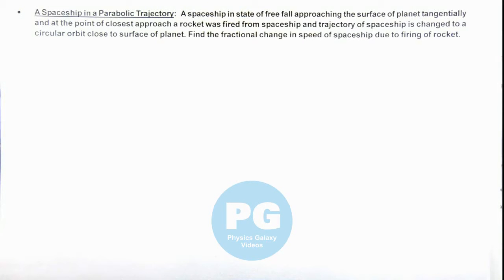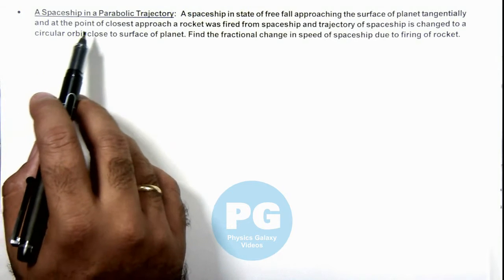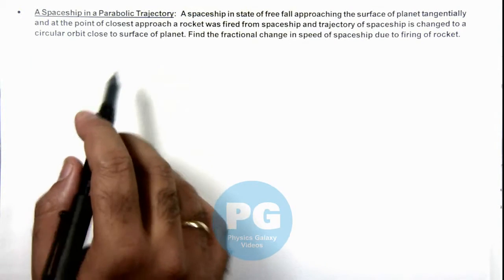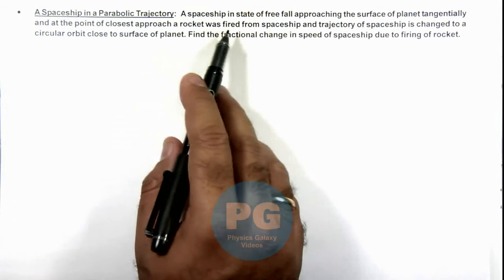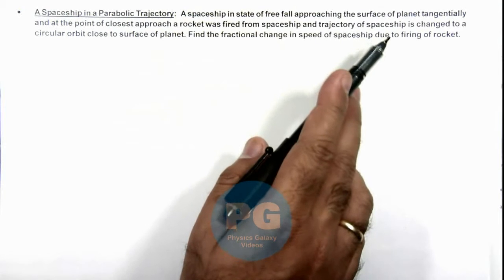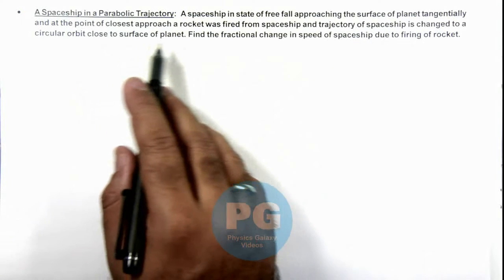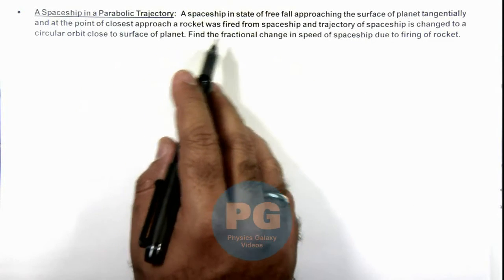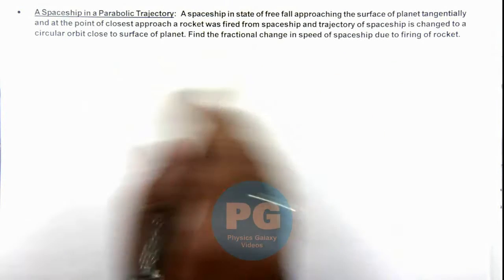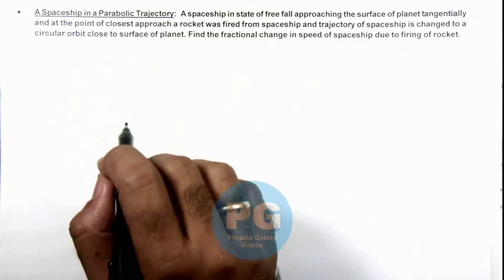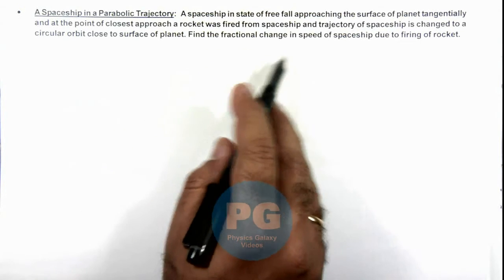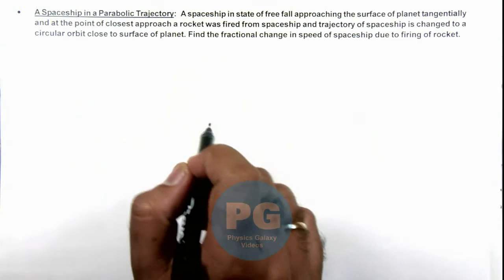In this illustration we'll see a spaceship in a parabolic trajectory and analyze this situation. We are given that a spaceship is in a state of free fall, approaching the surface of a planet tangentially. At the point of closest approach, a rocket was fired from the spaceship and the trajectory was changed to a circular orbit close to the surface of the planet. We are required to find the fractional change in speed due to firing of the rocket.